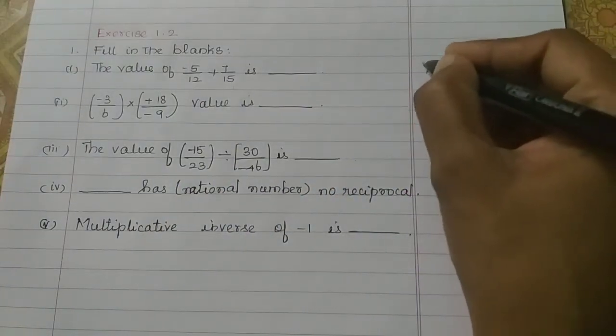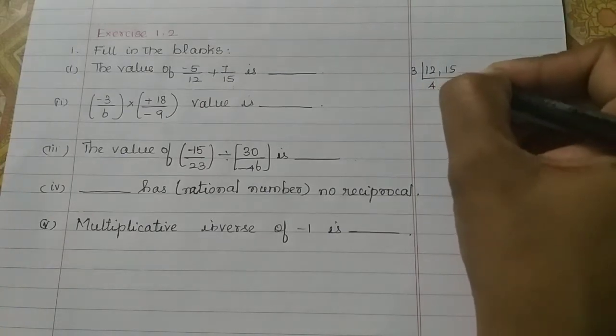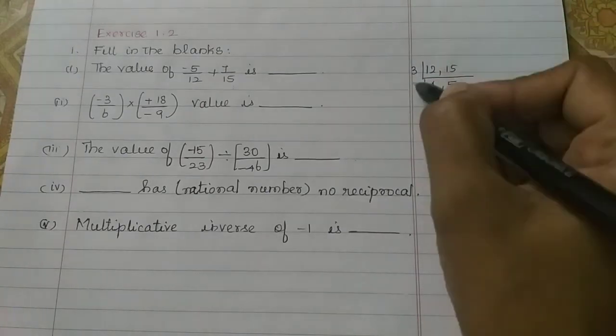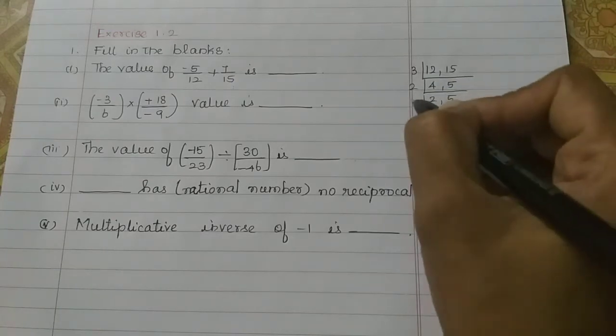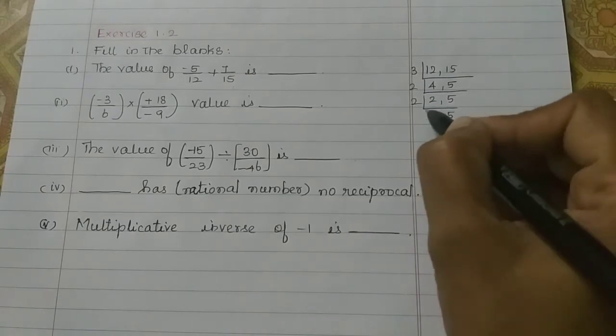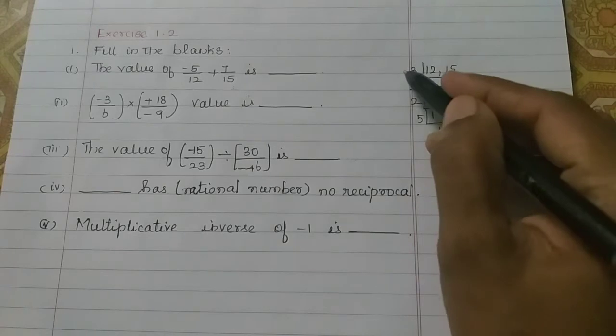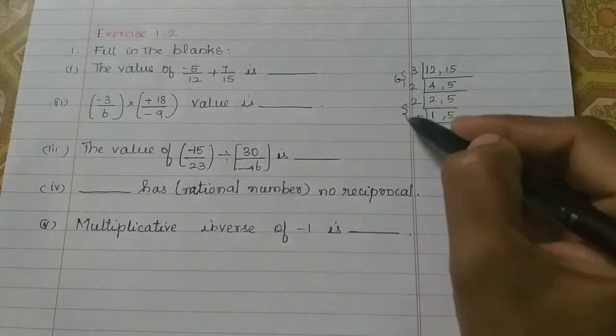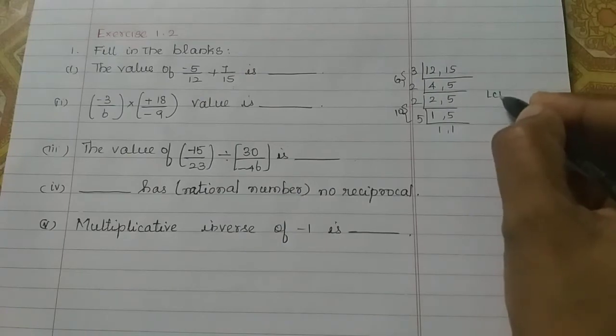Then, we will find LCM. So, in 3 tables, 3 fours are 12, 3 fives are 15. Then, in 2 tables, 2 twos are 4. In the 5, we will add 5. Again, by 2 tables, 1 two is 2. In the 5 tables, we will add 1 one. So, 3 twos are 6. Then, 5 twos are 10. So, 6 tens are 60. So, LCM is 60.